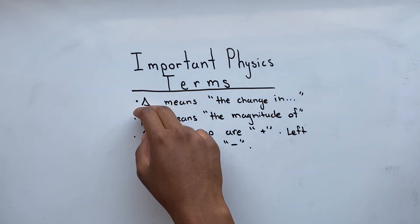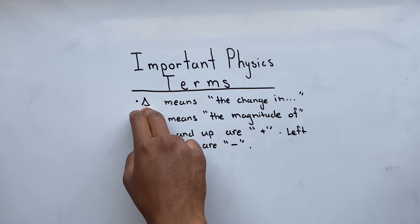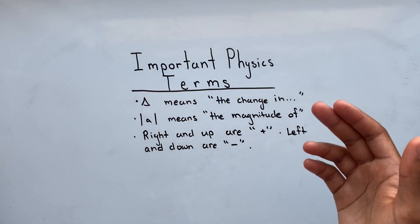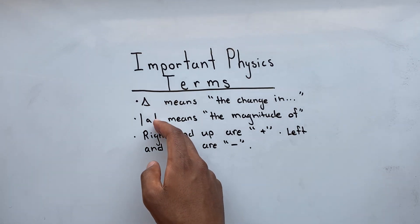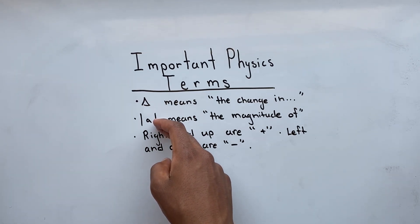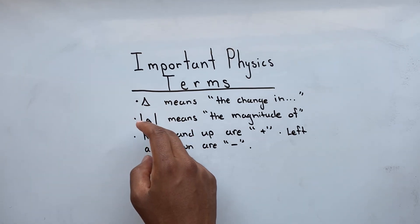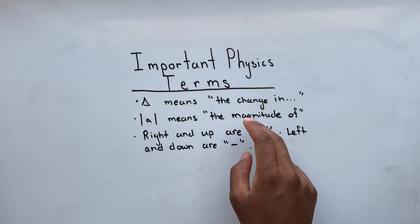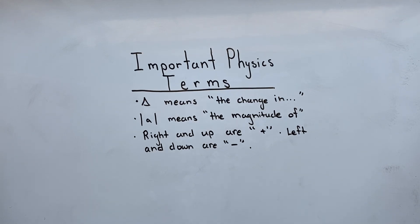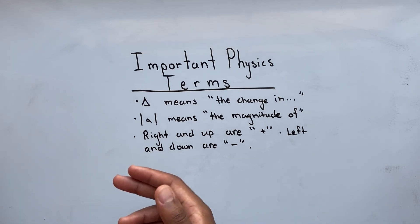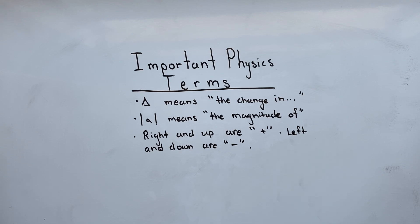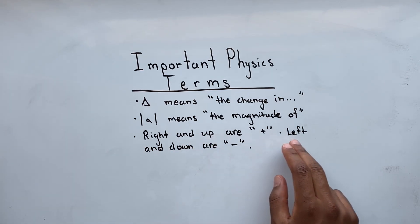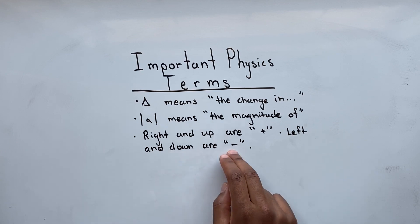Whenever you see this triangle, this is the Greek symbol delta. Delta means the change in something — this could be the change in speed or the change in height. Whenever you see these absolute value signs, any number within these brackets will always come out positive; what you're actually doing is taking the magnitude of that number. For instance, if I asked you what was the magnitude of negative 6, the answer would be 6. Lastly, understand that right and up are considered positive, and left and down are considered negative.